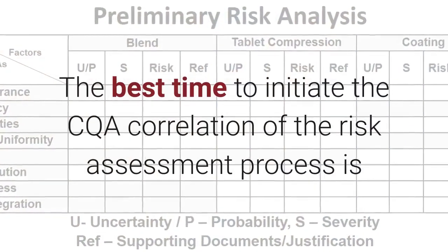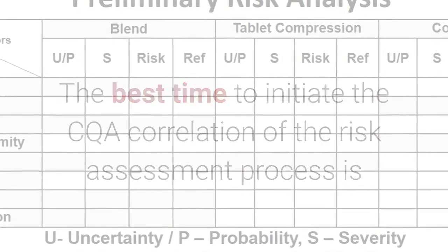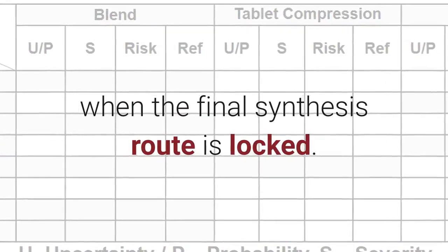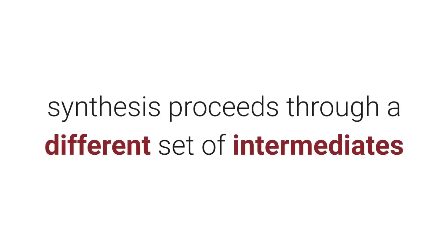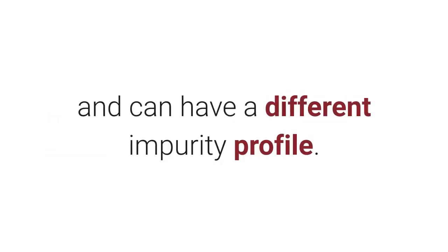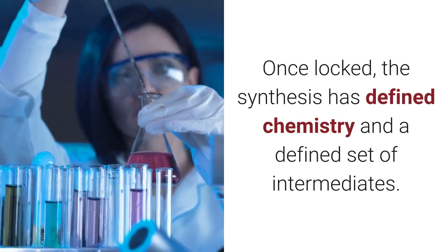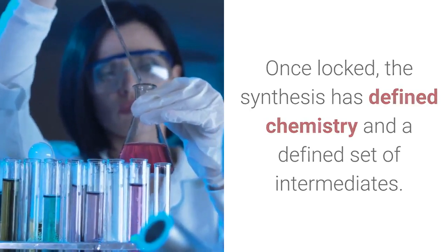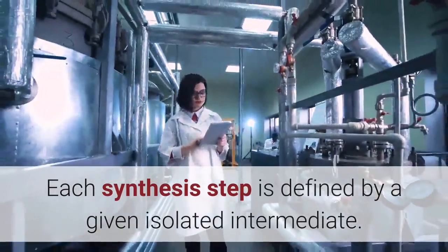The best time to initiate the CQA correlation of the risk assessment process is when the final synthesis route is locked. It makes no sense to begin earlier because major changes in the synthetic route mean the synthesis proceeds through a different set of intermediates and can have a different impurity profile. Once locked, the synthesis has defined chemistry and a defined set of intermediates, and each synthesis step is defined by a given isolated intermediate.